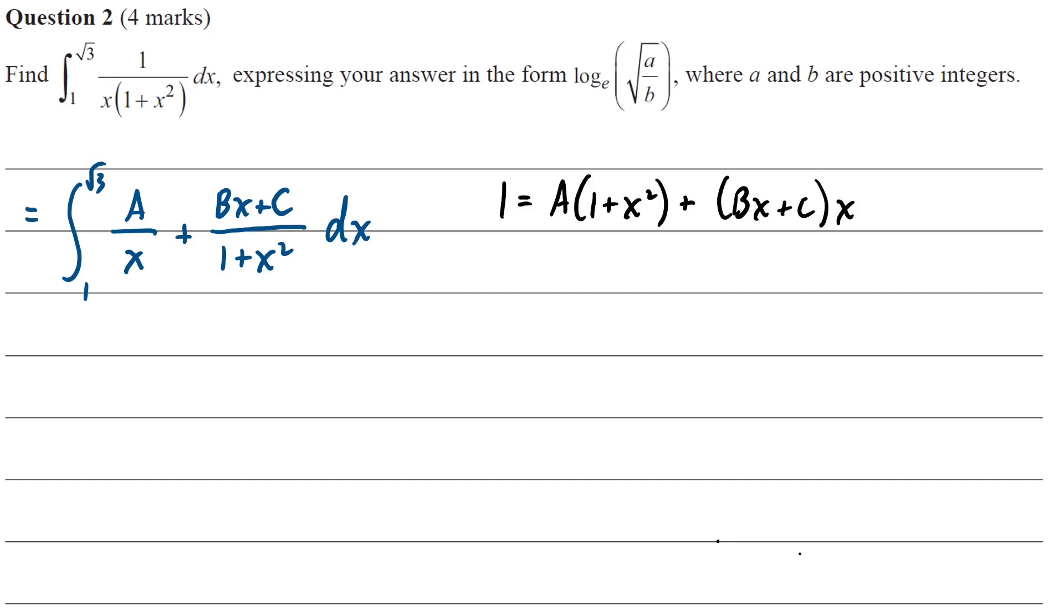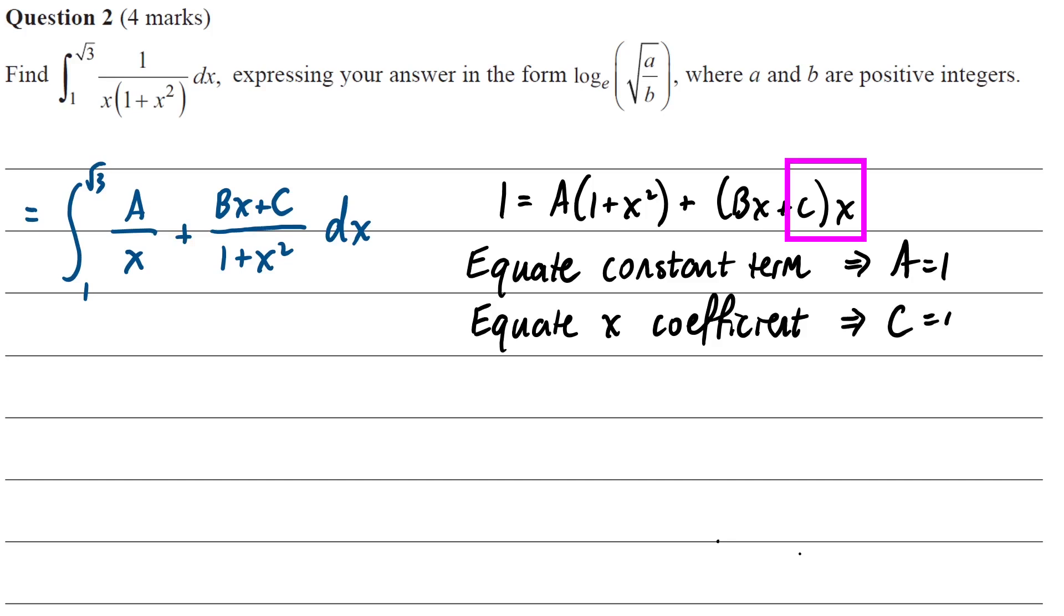And in this case, I think the easiest way to do it is by equating coefficients. So if we look at the constant term on the left has to be 1, and on the right hand side, the constant term is just coming from a times 1, so a would have to be 1. Then looking at the x term, which on the left is 0, on the right is only coming from c, so then c has to be 0. And finally, from the x squared term, we can work out that b has to be negative 1, because ax squared plus bx squared would have to be 0x squared.